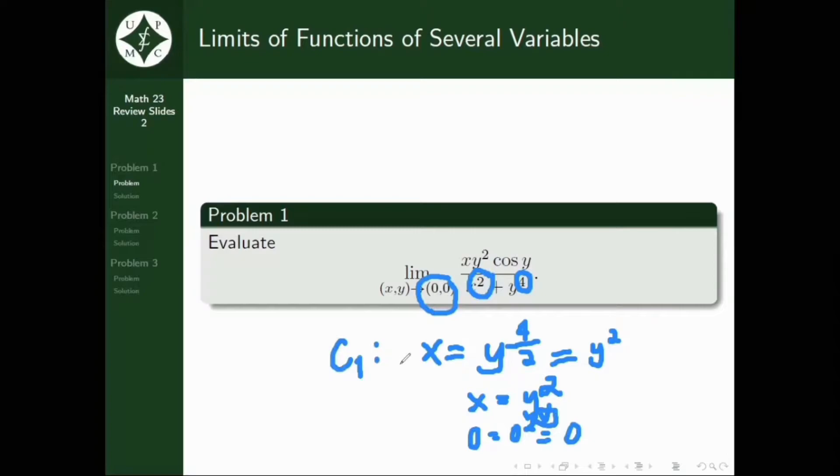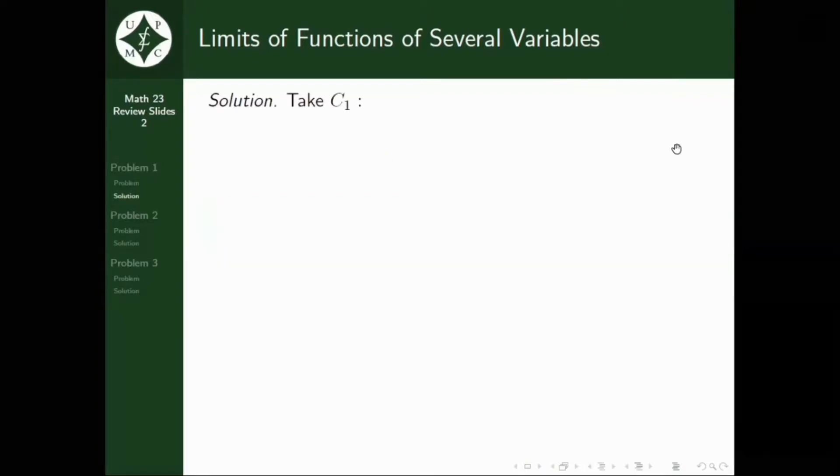And again, kuha pa tayo ng isang curve. Ako kasi, kapag nakita kong approaching sa origin, yung ordered pair, kinoconsider ko na agad yung mga axis. But, sige, for this case, let's consider isa sa mga axis. So, first, as I've said a while ago, let's take the curve X equals Y squared, and, amili lang tayo sa axis, let's consider the X axis. Y equals 0.